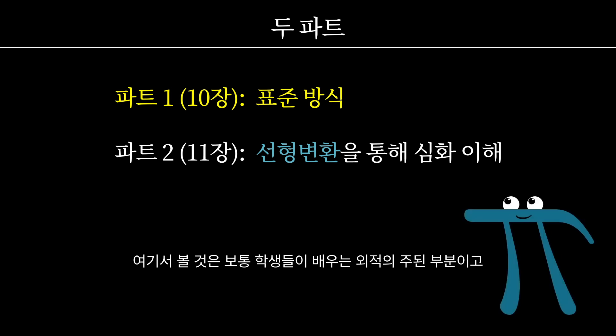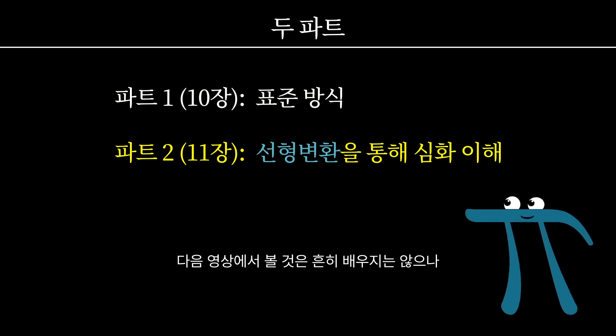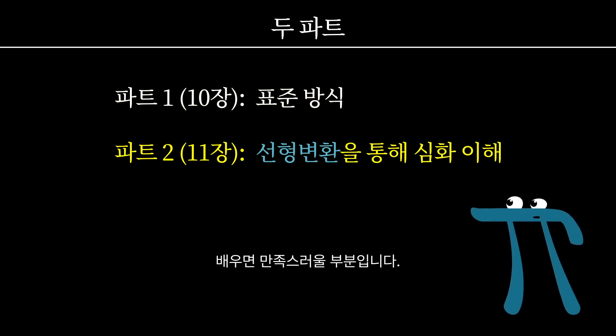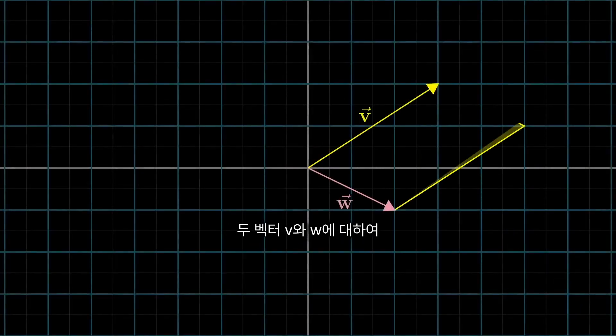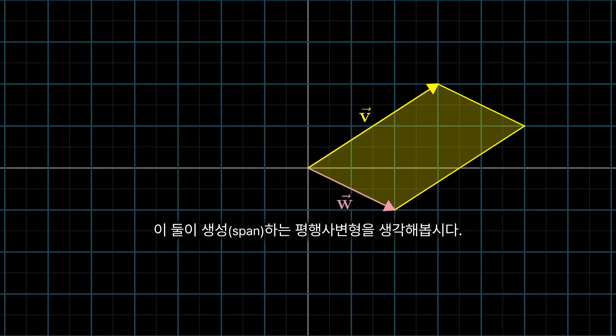Here I'll try to hit the main points that students are usually shown about the cross product, and in the next video I'll be showing a view which is less commonly taught, but really satisfying when you learn it. We'll start in two dimensions. If you have two vectors, v and w, think about the parallelogram that they span out.